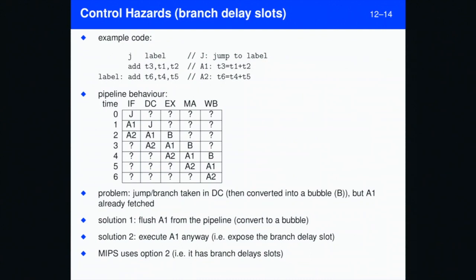Let's talk about branch delay slots, control hazards and delay slots. Let's take this simple example. So we've got a jump instruction that's a non-conditional jump. We're going to jump over an add, which I've labeled A1, and the label is A2.